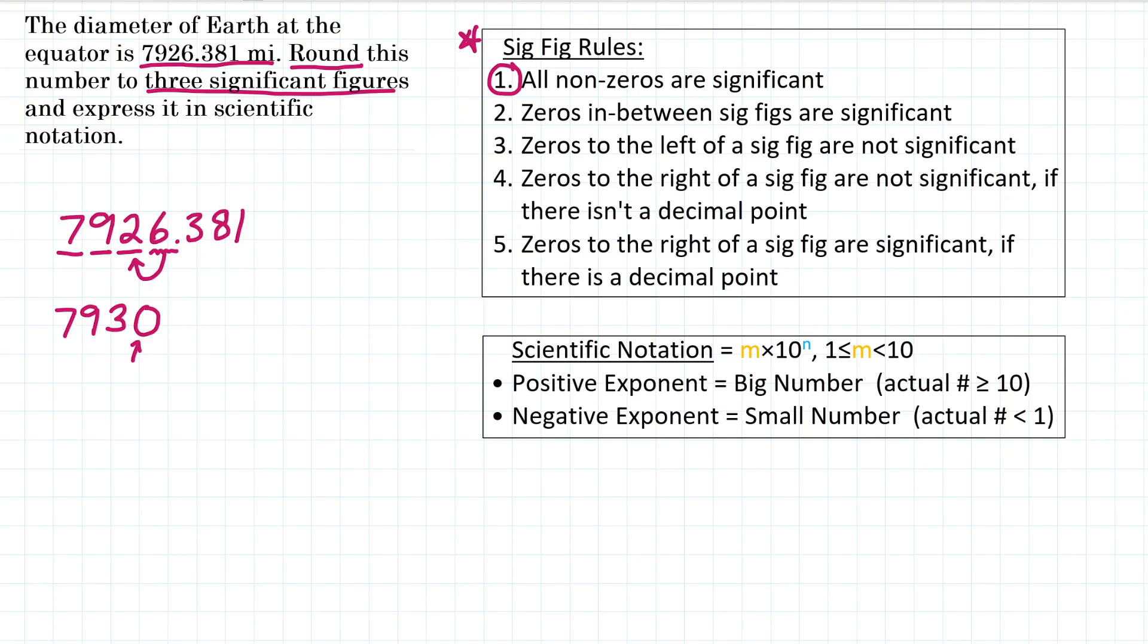All right, for the second part of the problem, we want to express that number in scientific notation. So what is 7,930 in scientific notation? Well, we have our scientific notation notes over on the right where we have some number m times 10 to the n power. And that m, that first part of the scientific notation, needs to be in between 1 and 10.